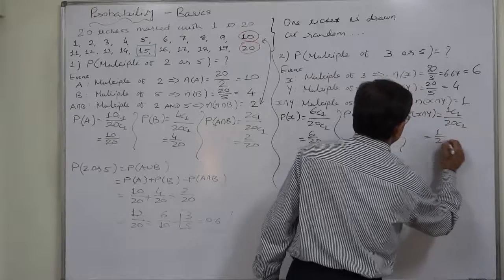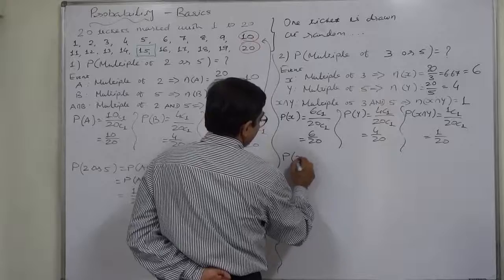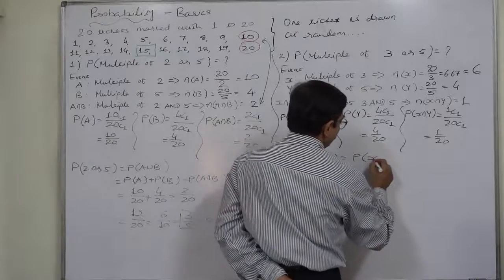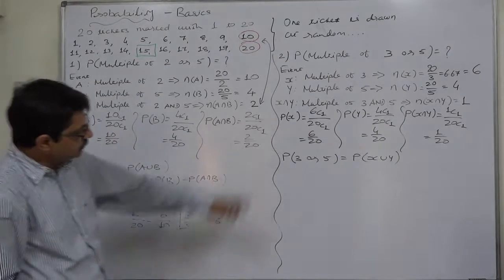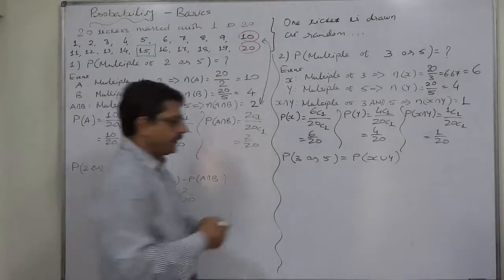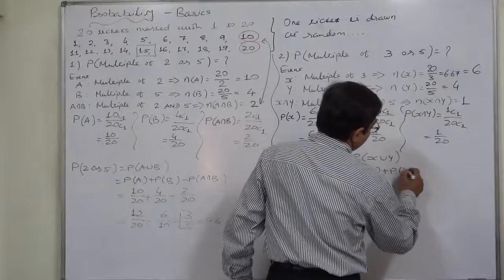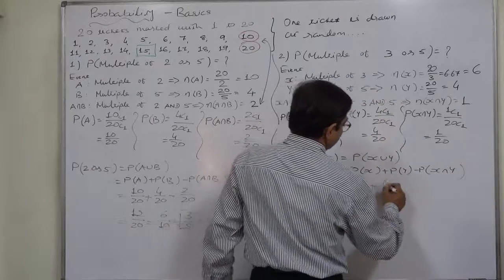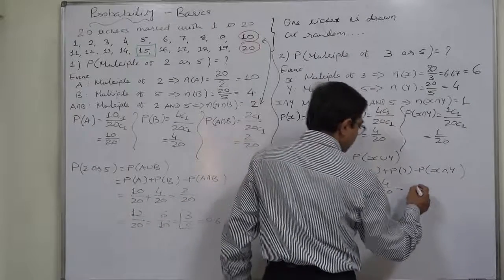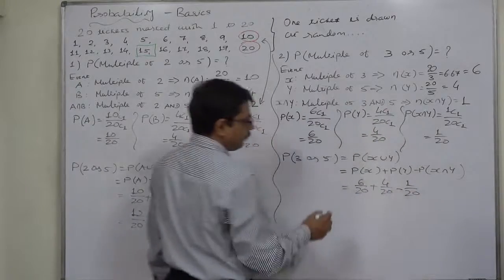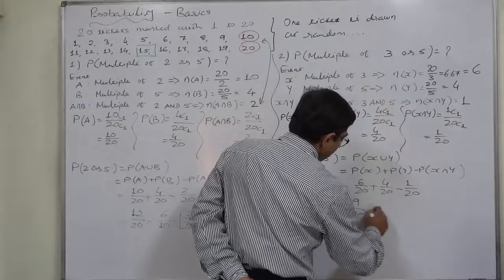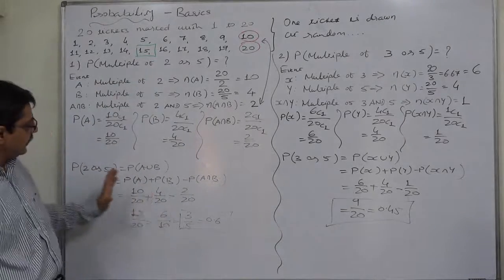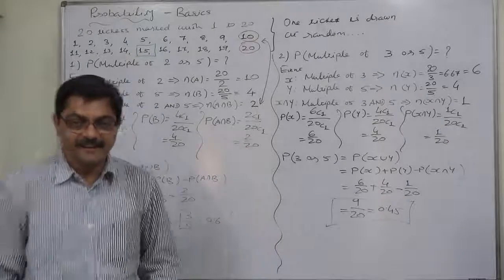The probability that the number on the ticket is a multiple of 3 or 5 is P(X union Y). Since the intersection is possible, we use the general law of addition: P(X) + P(Y) − P(X intersection Y) = 6/20 + 4/20 − 1/20 = 9/20 = 0.45. This is essentially a revision of the first case.